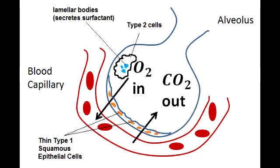Clara cells are non-ciliated columnar cells that have secretory granules. They are found in the bronchioles and protect the bronchial epithelium. Clara cells protect the bronchial epithelium by secreting components of surfactant and degrading toxins via cytochrome P450. Additionally, Clara cells act as reserve cells.